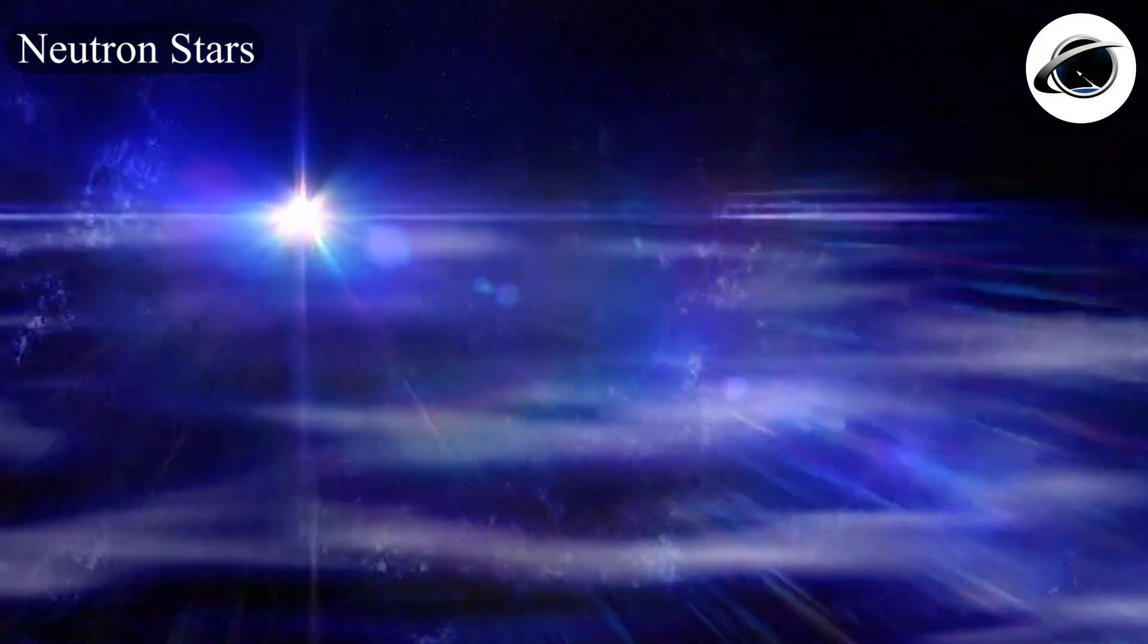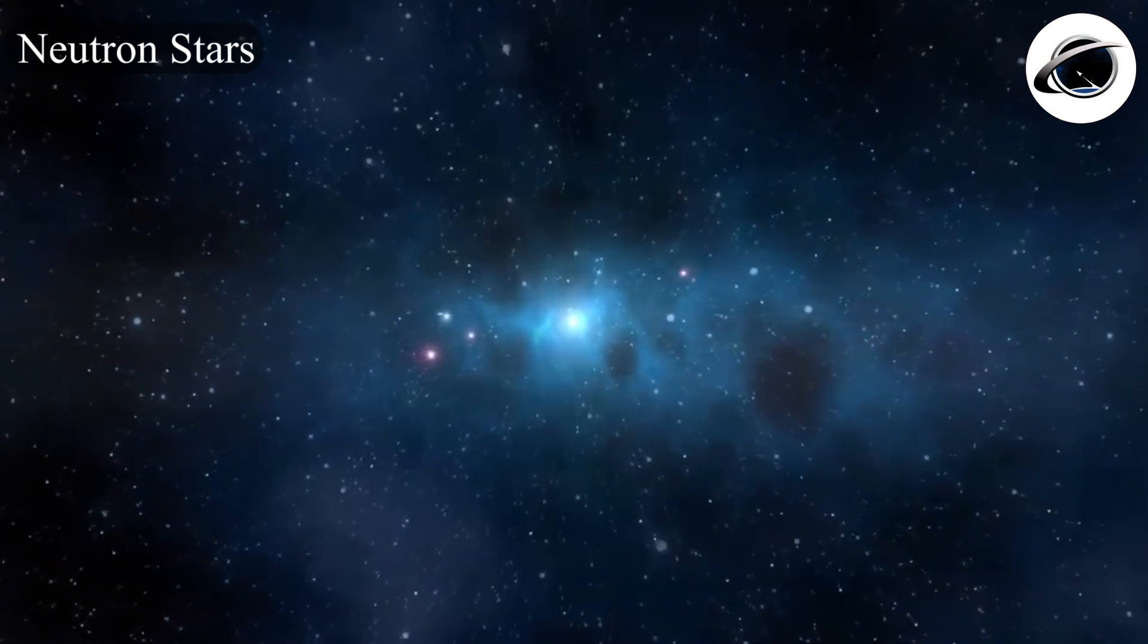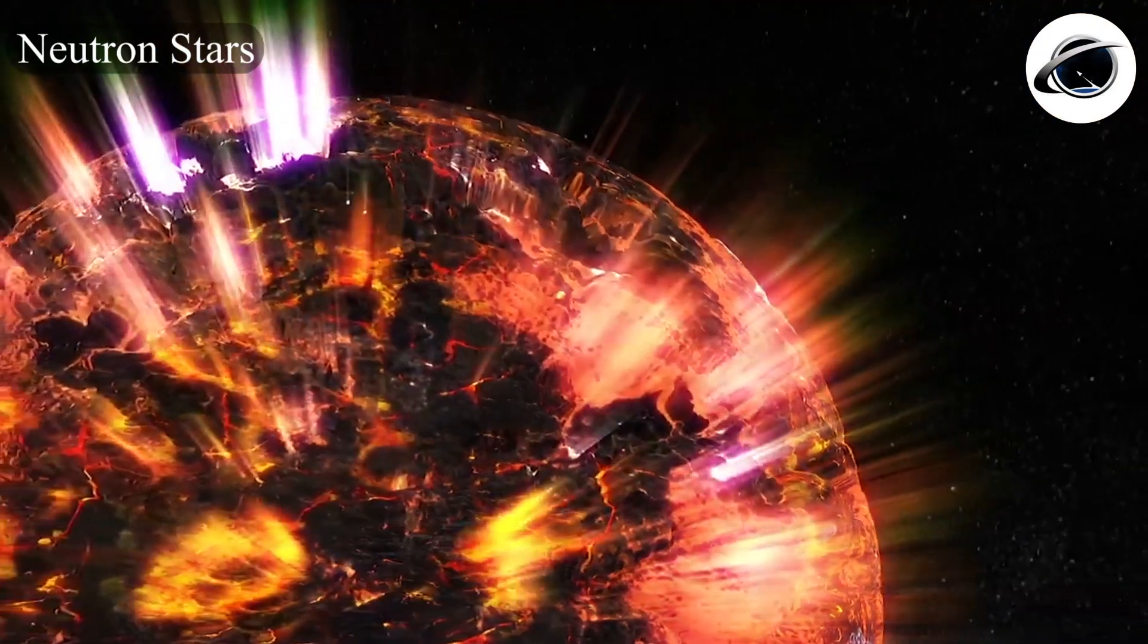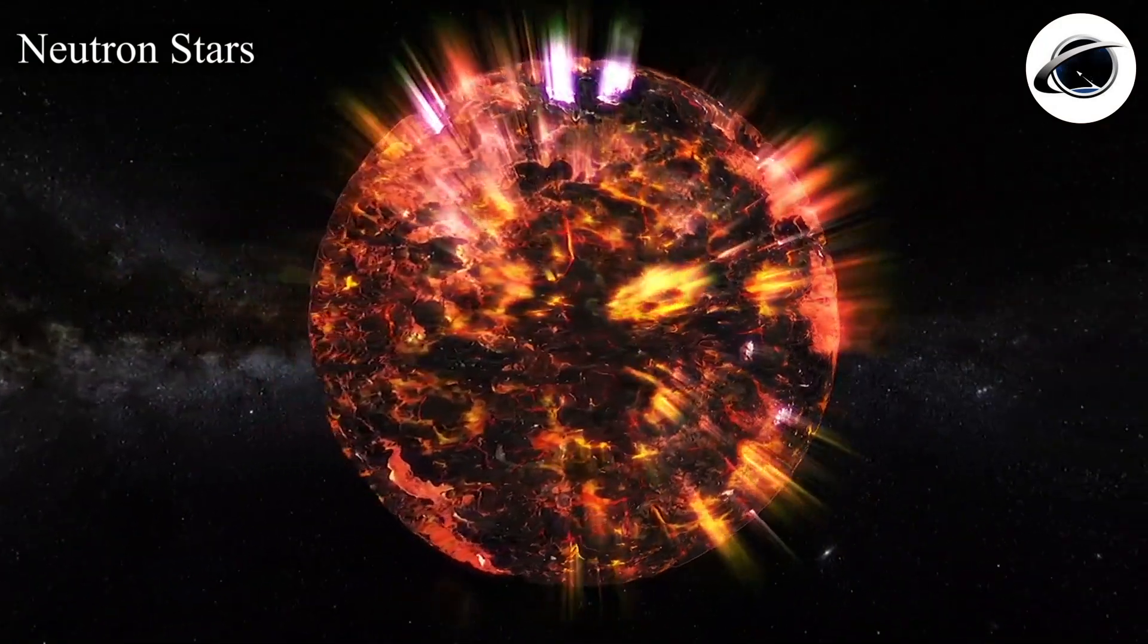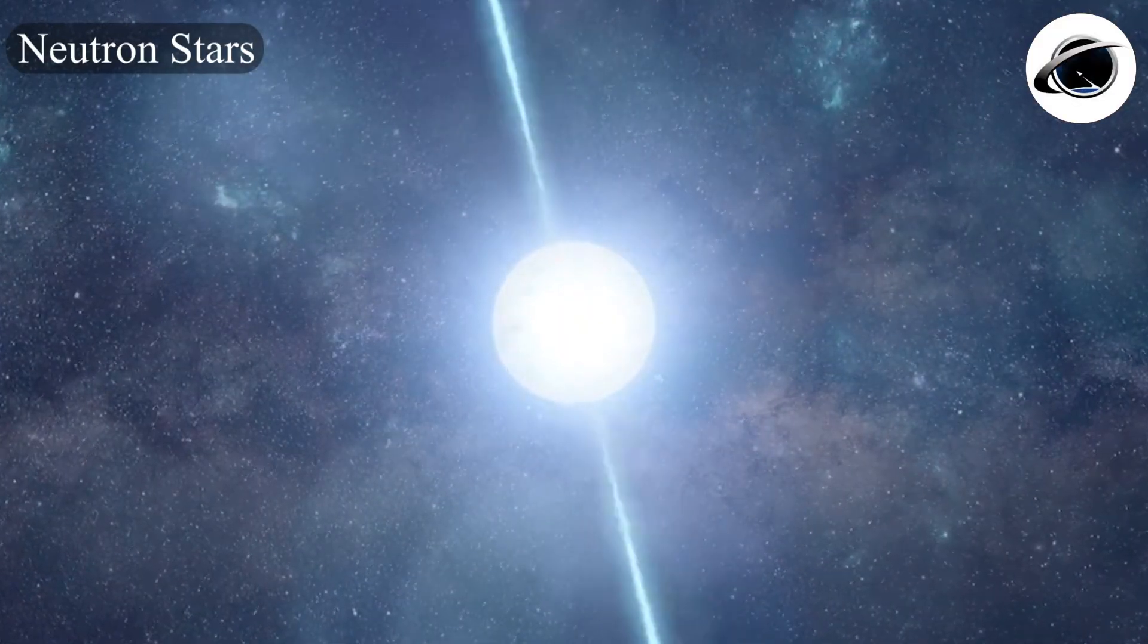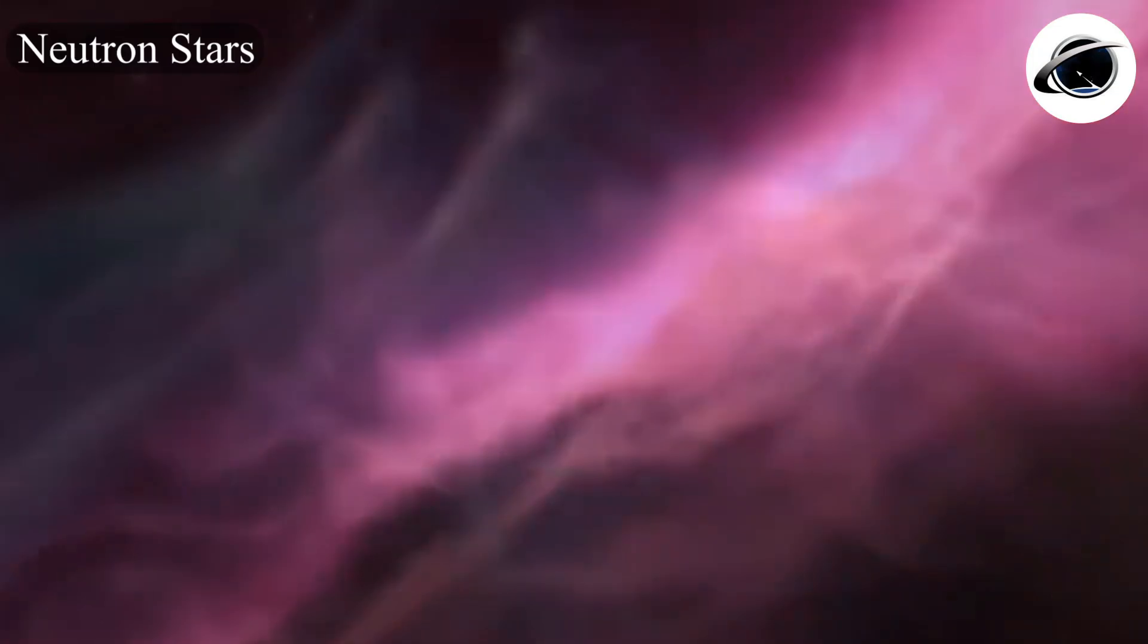A neutron star is the collapsed core of a massive supergiant star which has a total mass of between 10 and 25 solar masses. They are the smallest and densest known classes of stellar objects in the universe. However, they may still evolve further through collision.